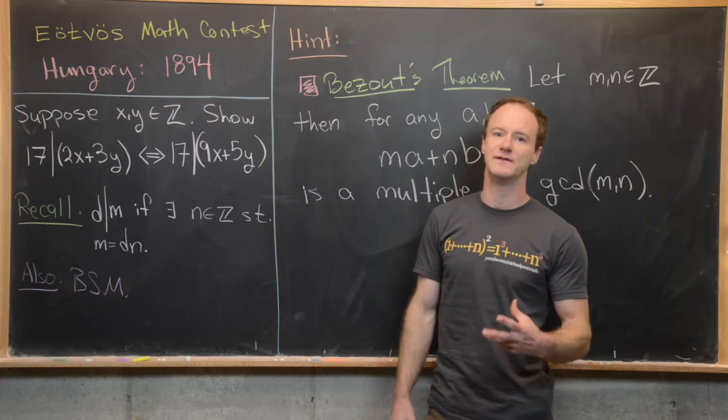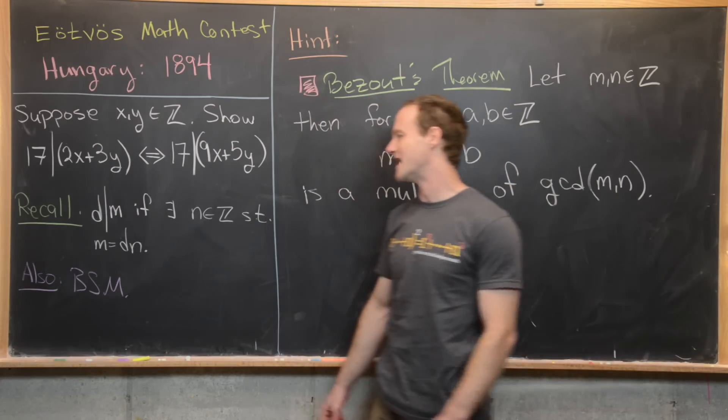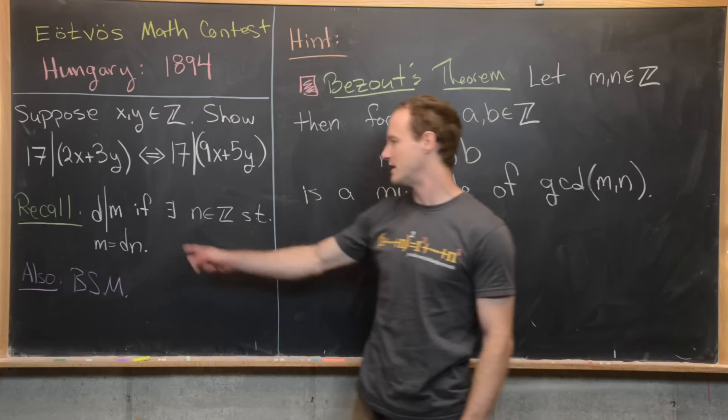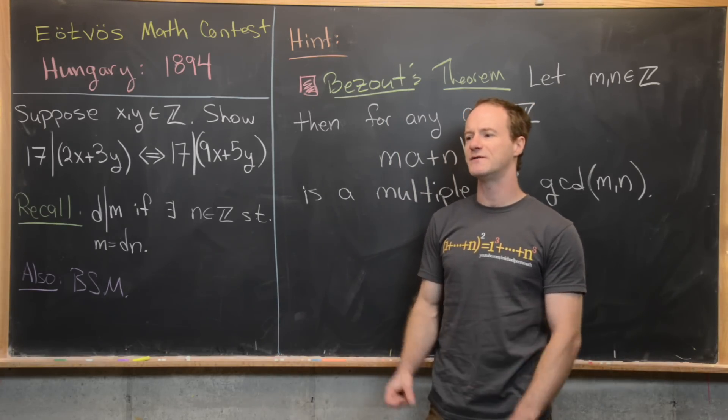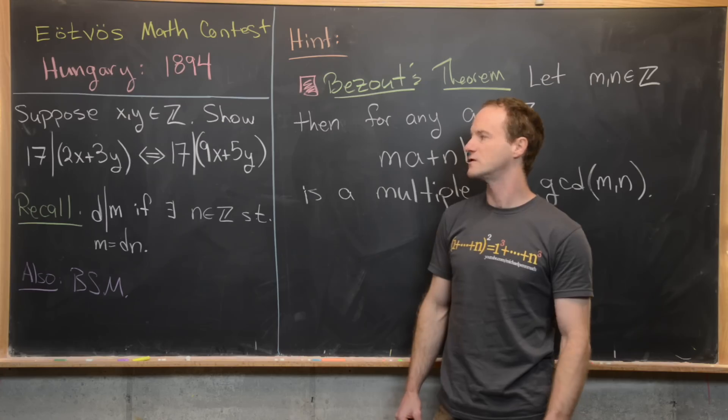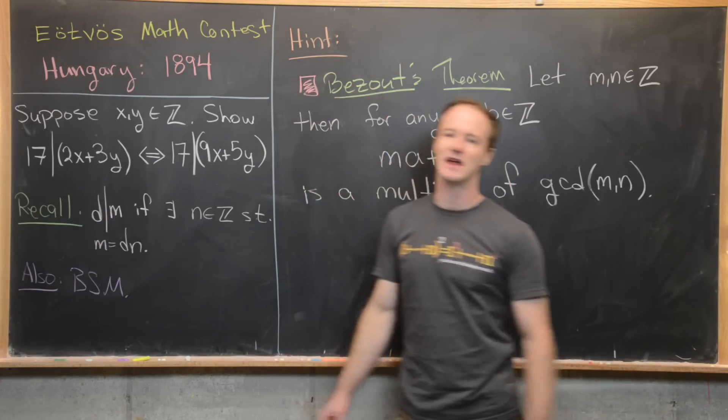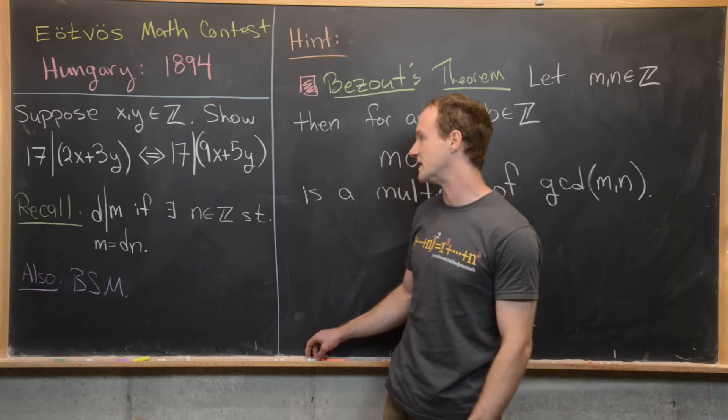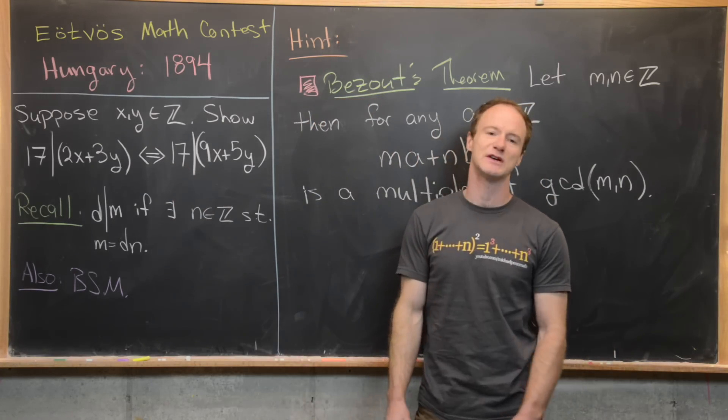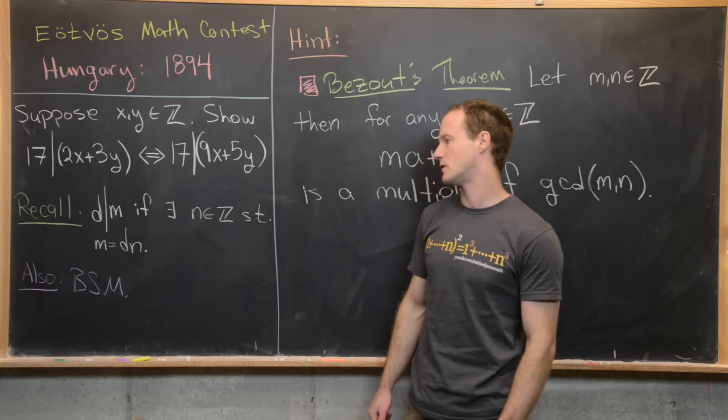And I want to recall the notion of divisibility among the integers. So we say d divides m if there exists an integer n such that m equals d times n. So this notion of divisibility and this notion of being a multiple of a certain number, those are one in the same. So instead of saying that d divides m, we could say that m is a multiple of d.